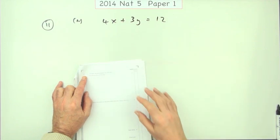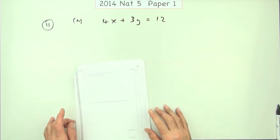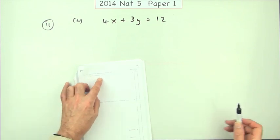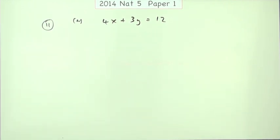Question 11 then from paper 1 of the 2014 National 5. What have we got? Equation of a line. First of all, what's the gradient of the line? Two marks.